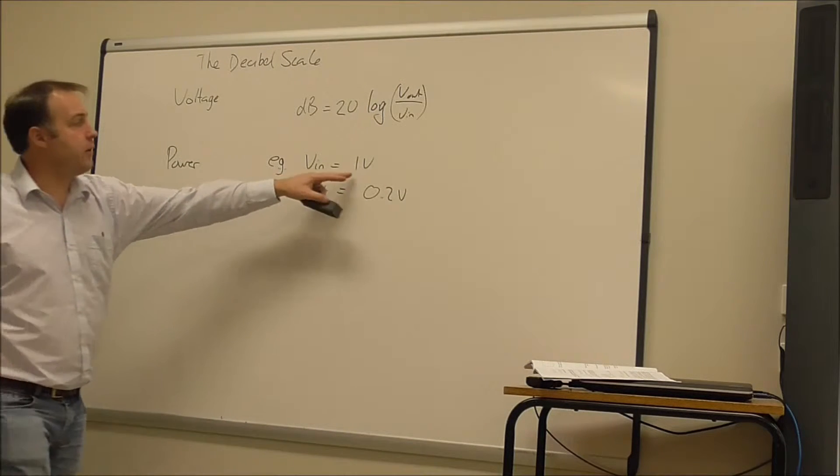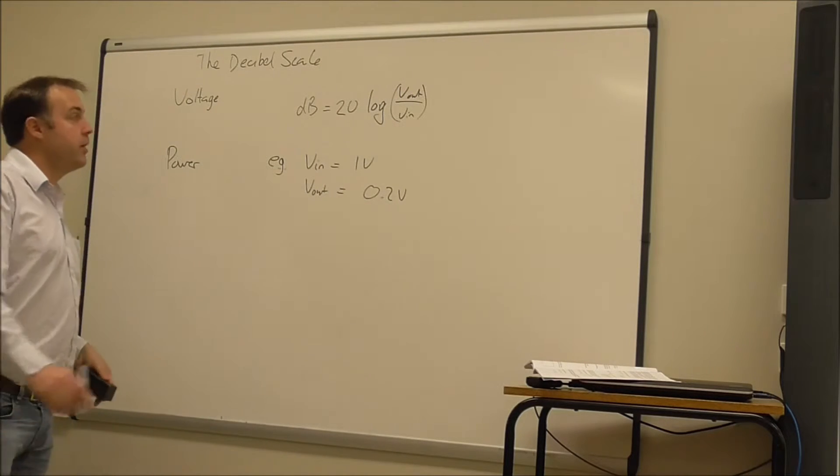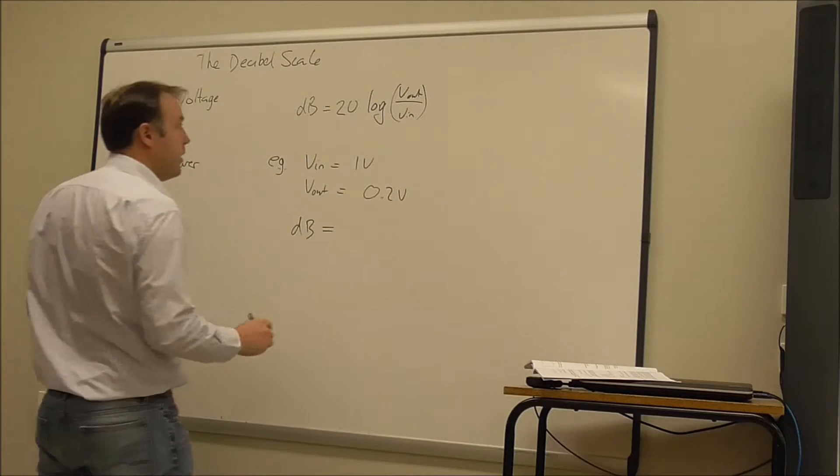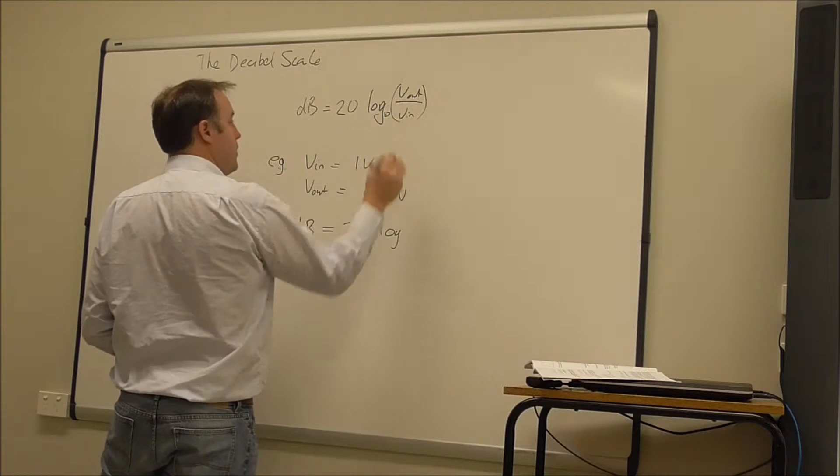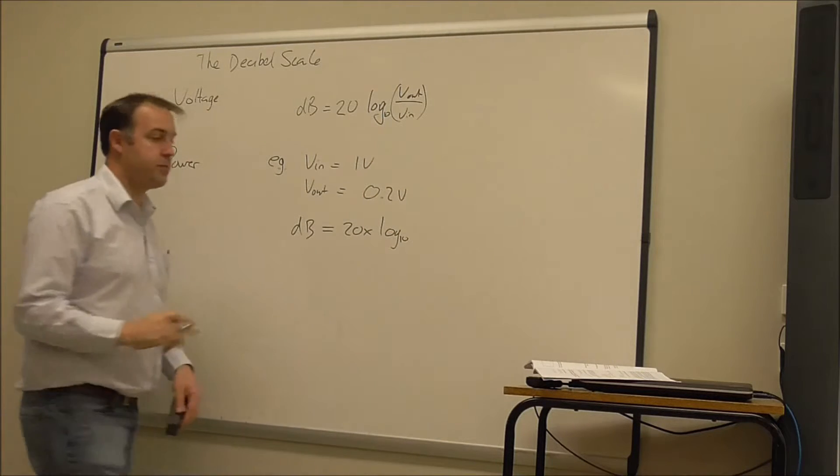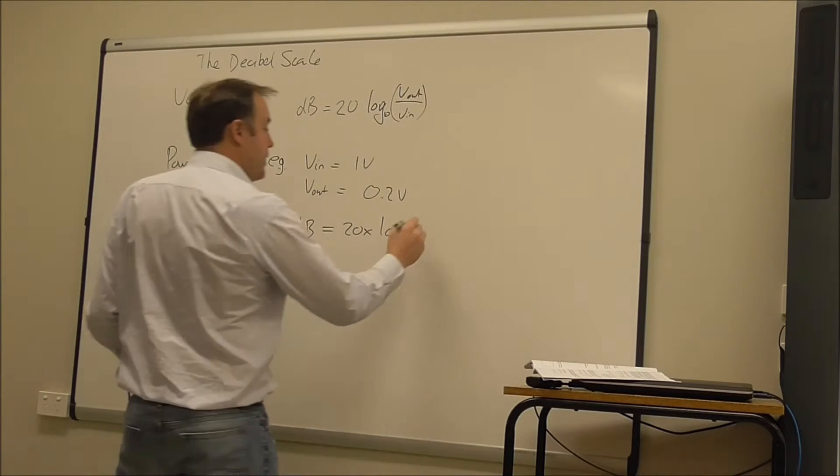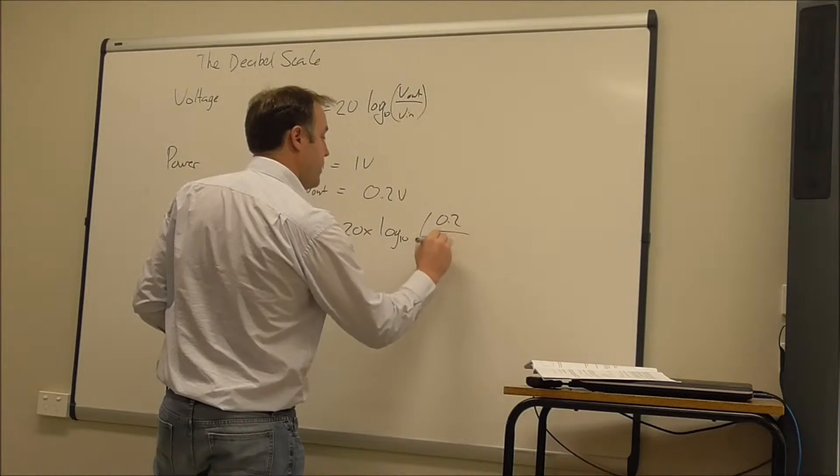So if I have an input voltage of one volt and my output voltage is 0.2 volts, then I can calculate the decibel. It's going to be 20 times log base 10. So you calculate if you just press the log button, it does a log base 10 for you. And it's the ratio of the output to the input. So 0.2 divided by 1.